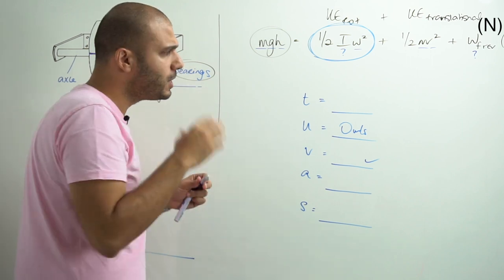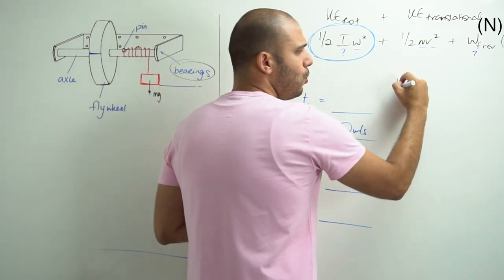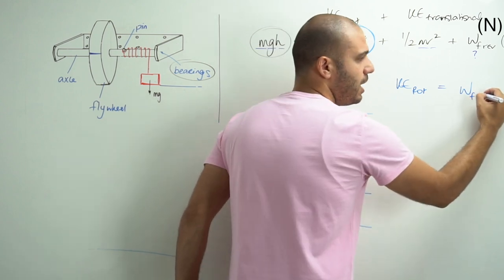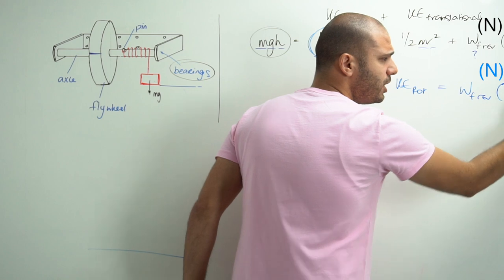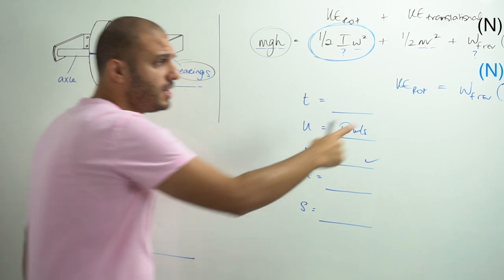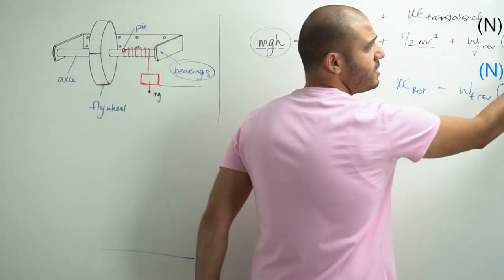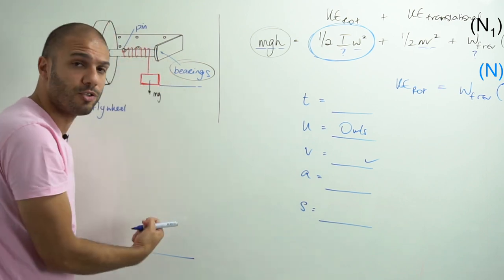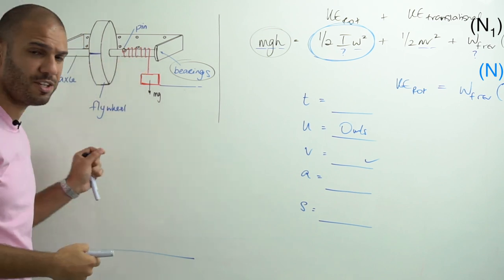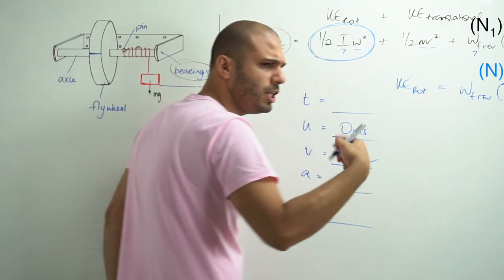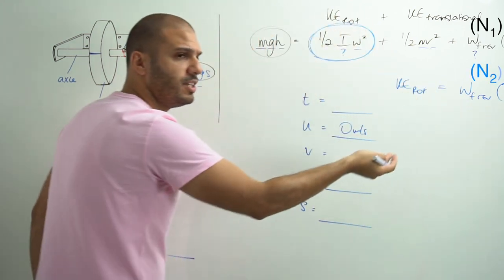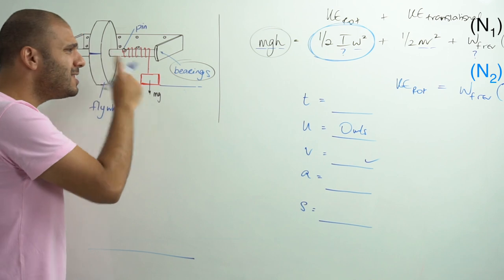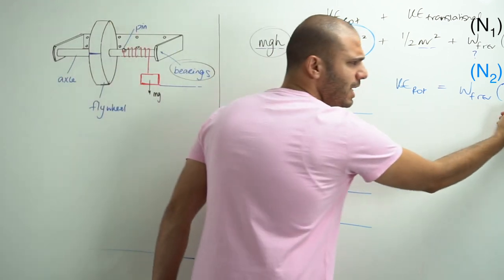So we can come up with a second equation. Remember we've got two unknowns so we need two equations. We label N1 as the number of turns the flywheel rotates under the effect of the torque while the mass is falling. Once the mass hits the ground and the string detaches from the axle, we keep counting, and the number of turns from when the string detaches until the flywheel comes to a dead stop is labelled N2.